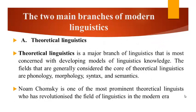The two main branches of modern linguistics. The first branch is theoretical linguistics. Theoretical linguistics is a major branch of linguistics that is most concerned with developing models of linguistic knowledge. The fields generally considered the core of theoretical linguistics are phonology, morphology, syntax, and semantics.